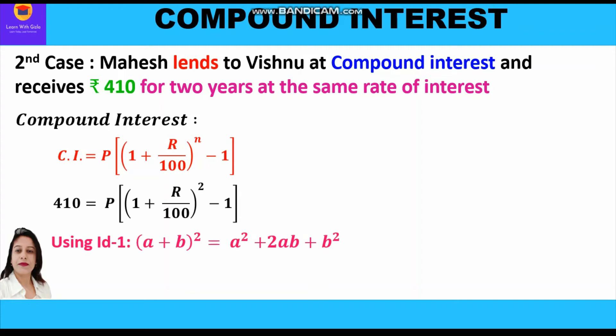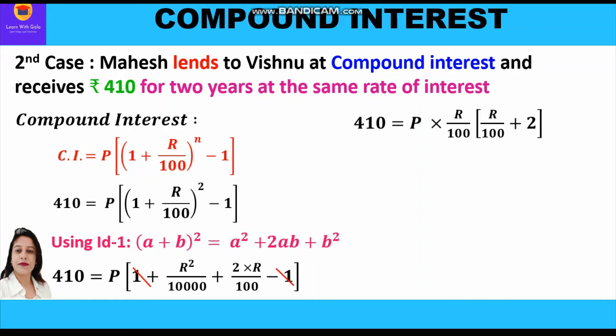To solve the bracket we use the identity (a + b)² = a² + 2ab + b². Expanding accordingly: 410 = P × [1 + R²/10000 + 2R/100 − 1]. The 1 and −1 cancel, and we can take R/100 as a common factor outside.